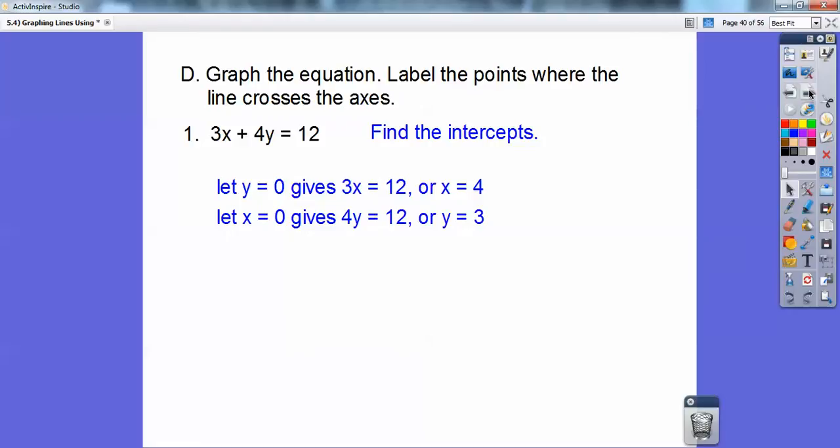And to get the y-intercept, we let x equal 0, and it gets rid of the 3x part, and you're left with 4y equals 12, or y equals 3. Those are my x and y-intercepts. So I'm going to go ahead and graph. There's the x-intercept right there. There's the y-intercept right there.